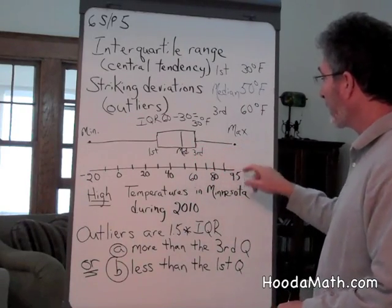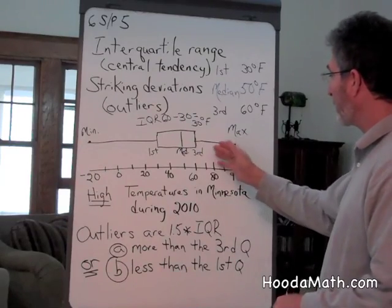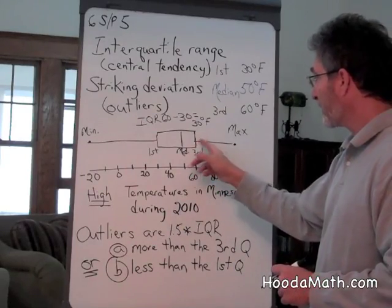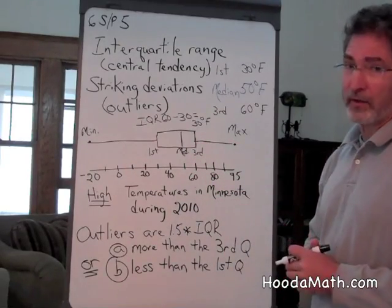So 95 degrees, or any of the temperatures lower than 95 degrees, between 60 and 95, are not outliers.